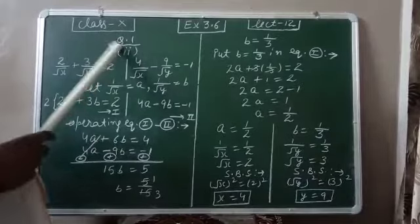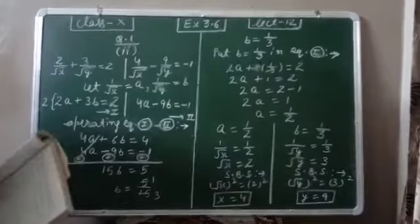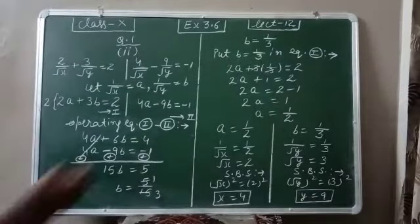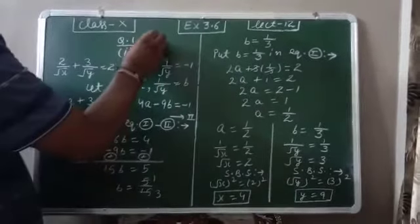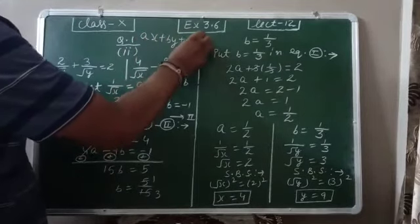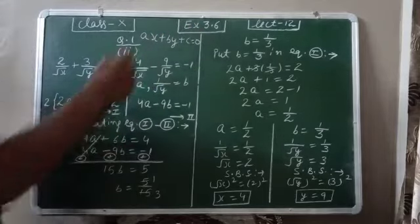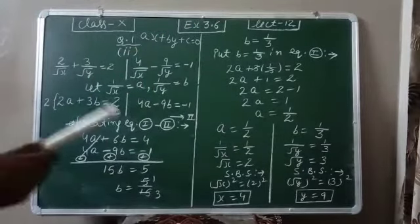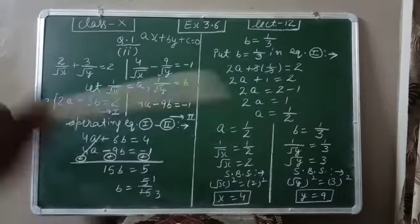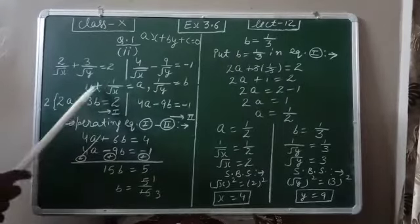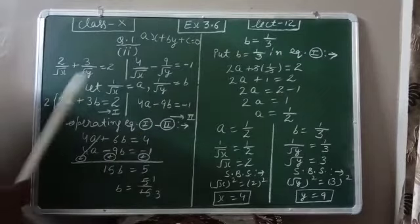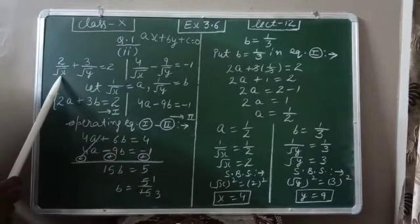Now in this exercise we first change the equation into a linear equation in 2 variables. The standard form of a linear equation in 2 variables is ax plus by plus c equal to zero, meaning x and y should be in the numerator. Here you can see that x and y are in the denominator, so to change these two equations into linear equations, we let 1 upon root x equal to a and 1 upon root y equal to b.